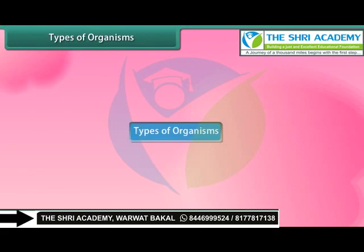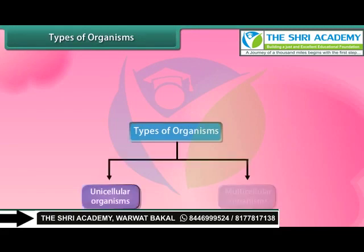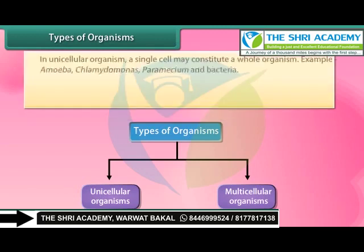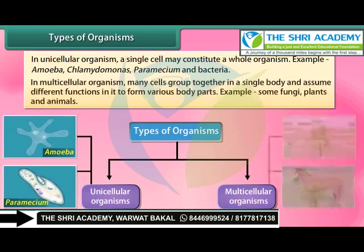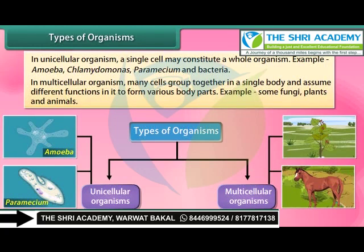There are two types of organisms: unicellular and multicellular. In unicellular organisms, a single cell constitutes a whole organism. Examples include amoeba, chlamydomonas, paramecium, and bacteria.